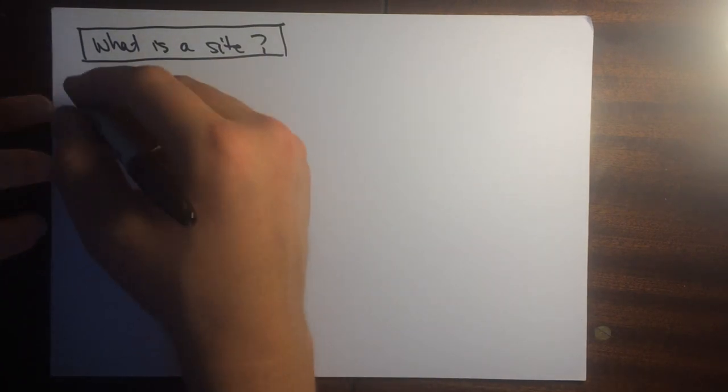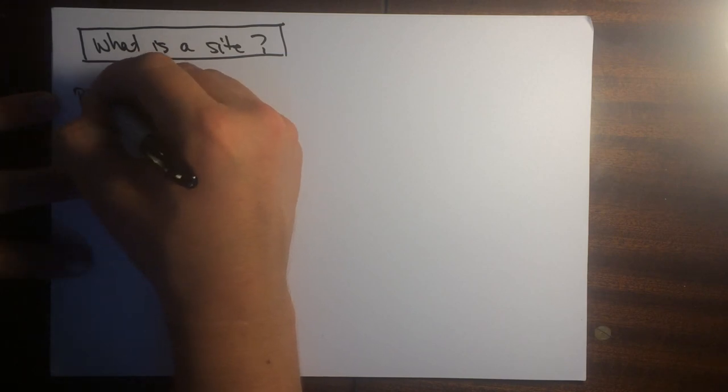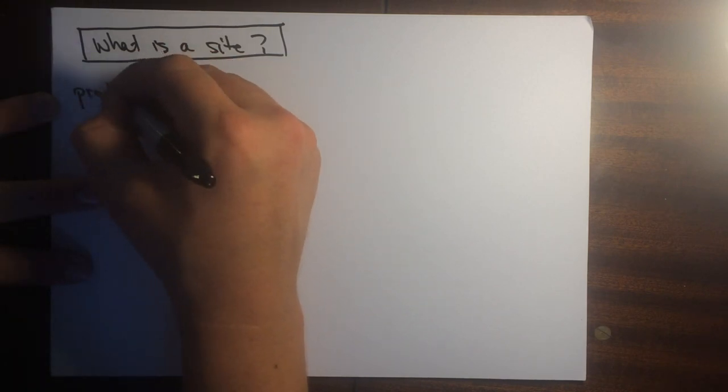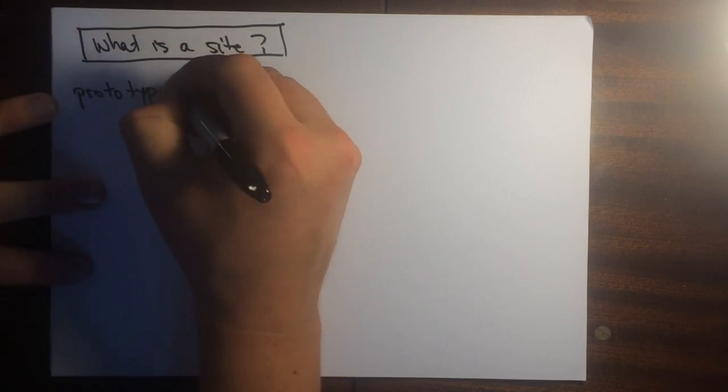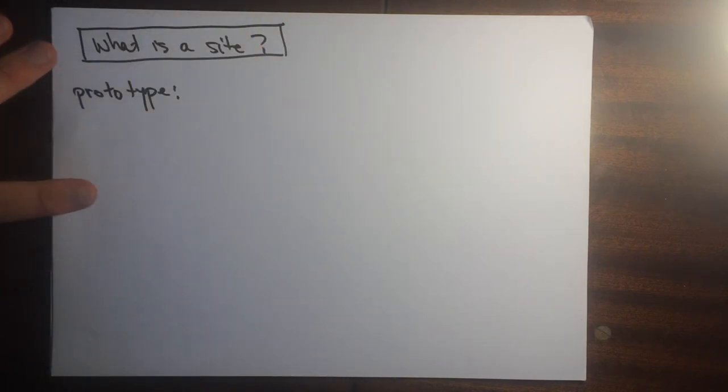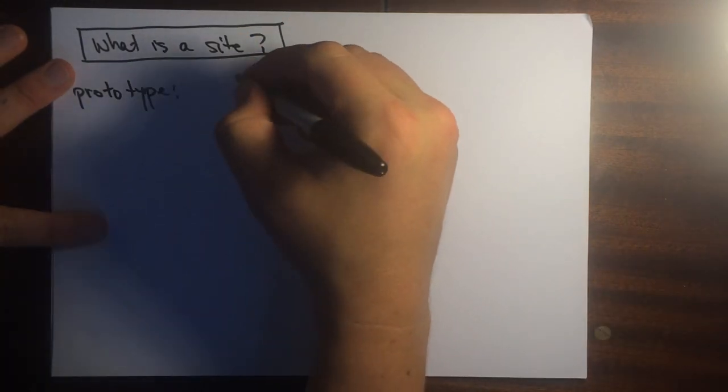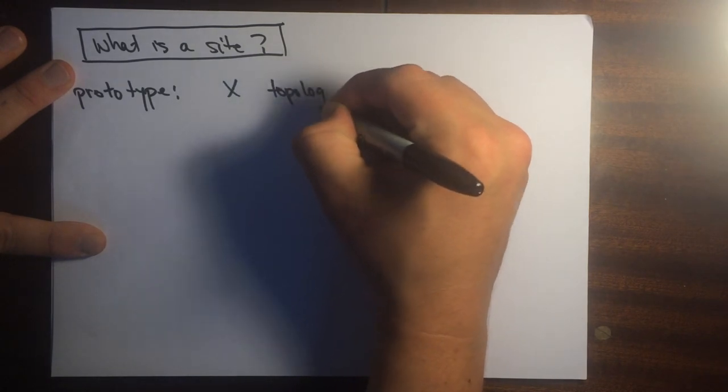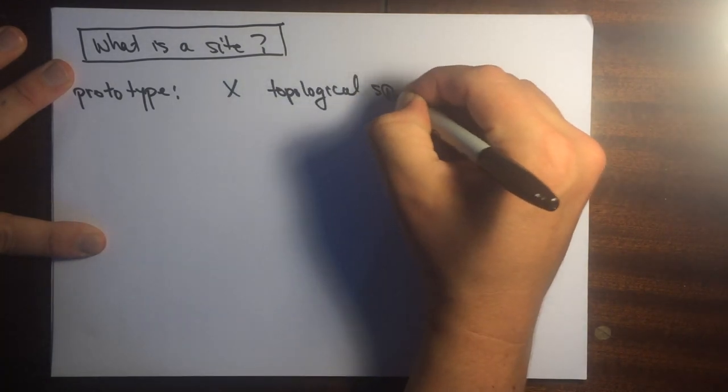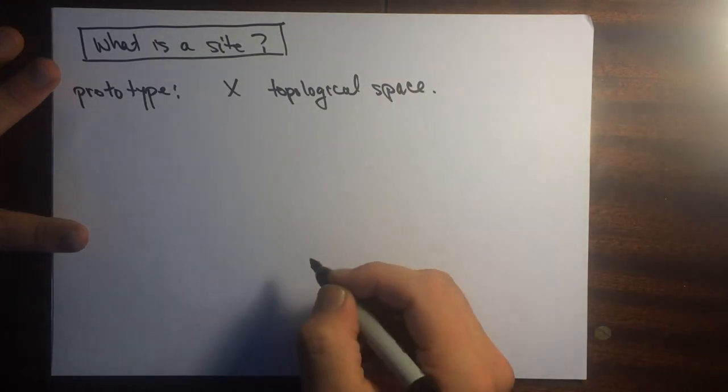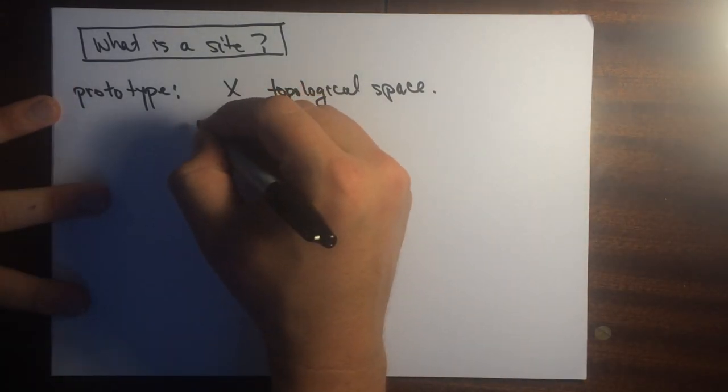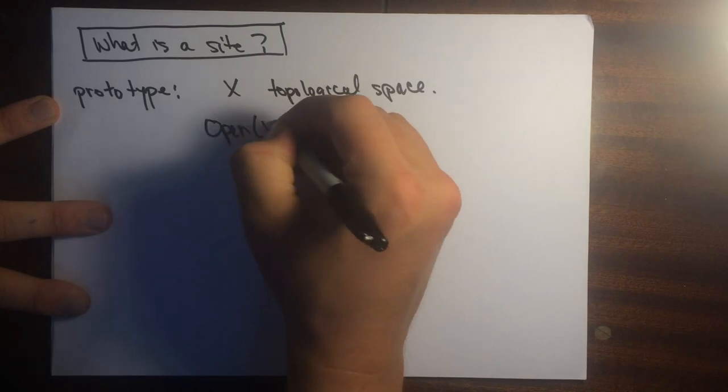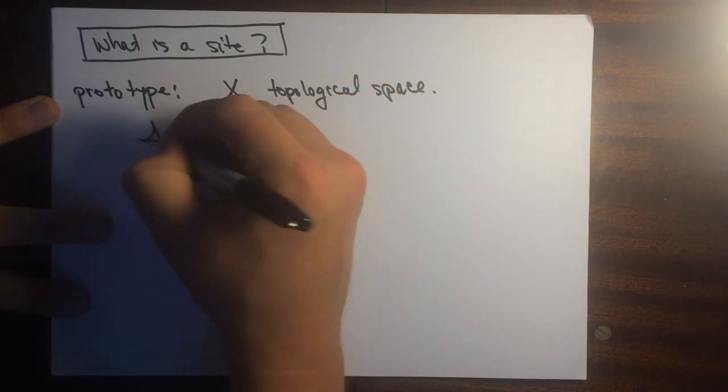Let me give the prototypical example. Here's a prototype for the notion of a site. Let's let X be a topological space. In 2X I can make a category, OpenX, and we'll call this category S, it's going to be a site.